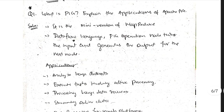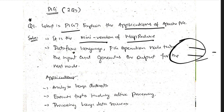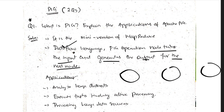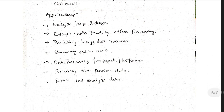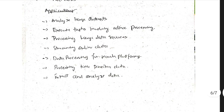Moving to Pig: Pig is like a mini version of MapReduce but additionally handles data flow — transferring data from node to node through intermediate steps. Applications of Pig include: analyzing large datasets, executing tasks, processing large data streams, processing online data, processing time-sensitive data, and extracting and analyzing data.